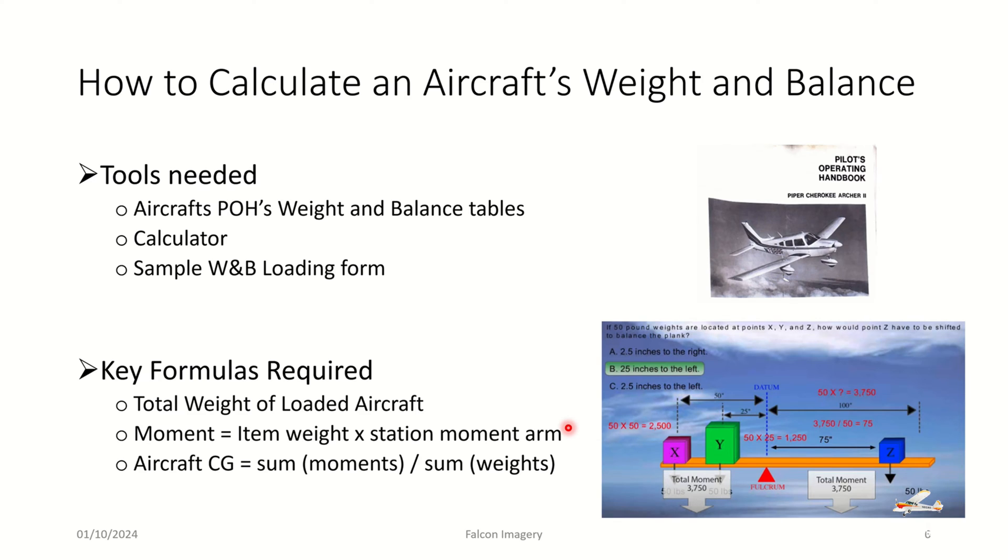Key formulas to remember: you need to sum up the total weight of the loaded aircraft, you need to do some multiplication to come up with the moments, and then you need to sum up all the moments and come up with an aircraft center of gravity by taking the sum of all the moments divided by the sum of all the weights. And we're going to give you an example next.